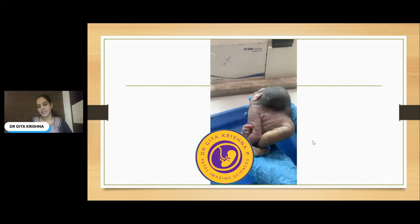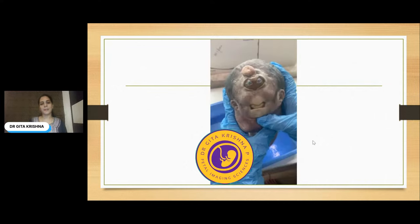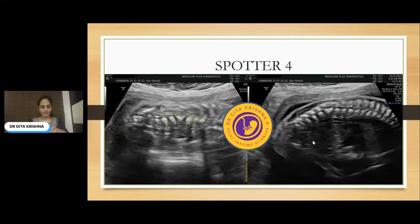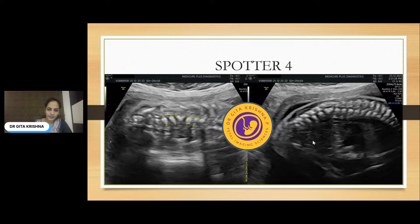We will switch to the next spotter. These are the sagittal as well as coronal images of the spine. What is your diagnosis here?